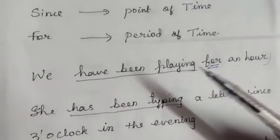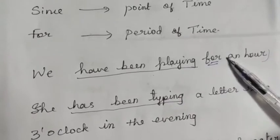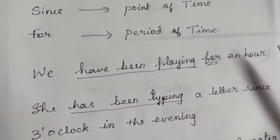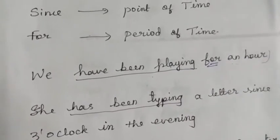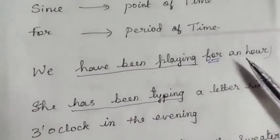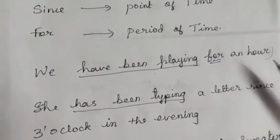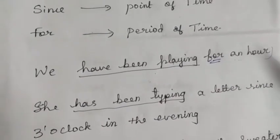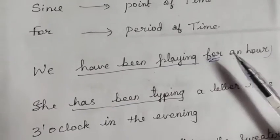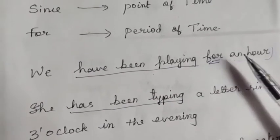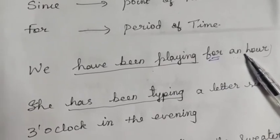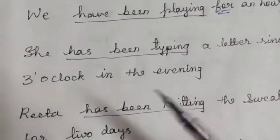'For an hour' means the action started one hour ago and is still continuing now. So the sentence is: 'We have been playing for an hour.' The action started in the past and is still ongoing.